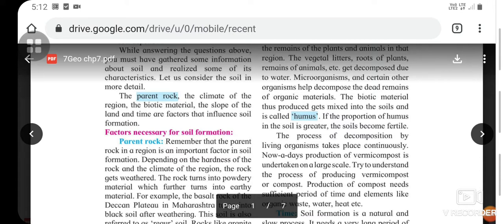The vegetal litter, roots of plants, remains of animals get decomposed due to water, microorganisms, and other organisms. The biotic material produced gets mixed into the soil and is called humus.